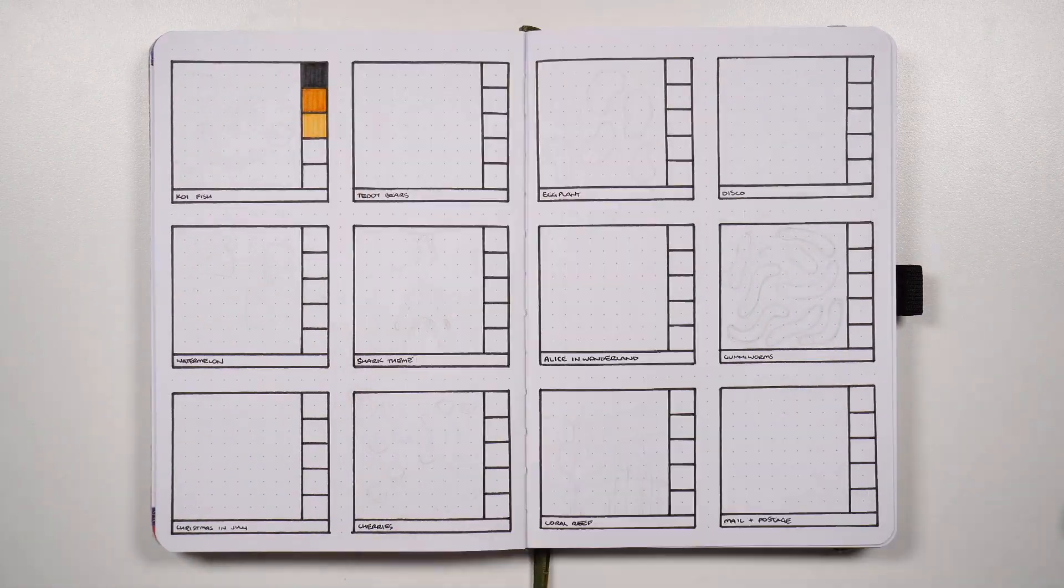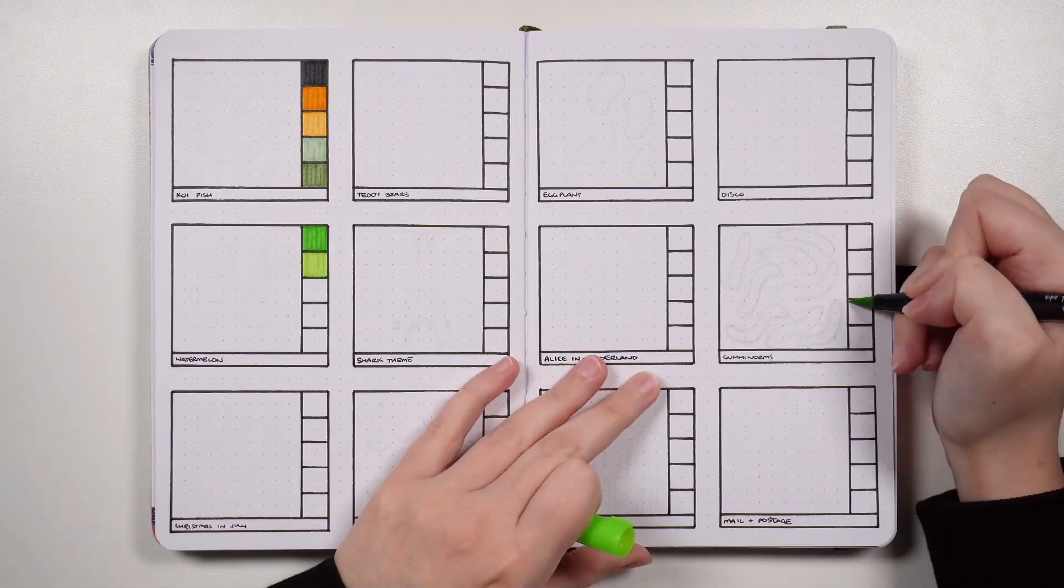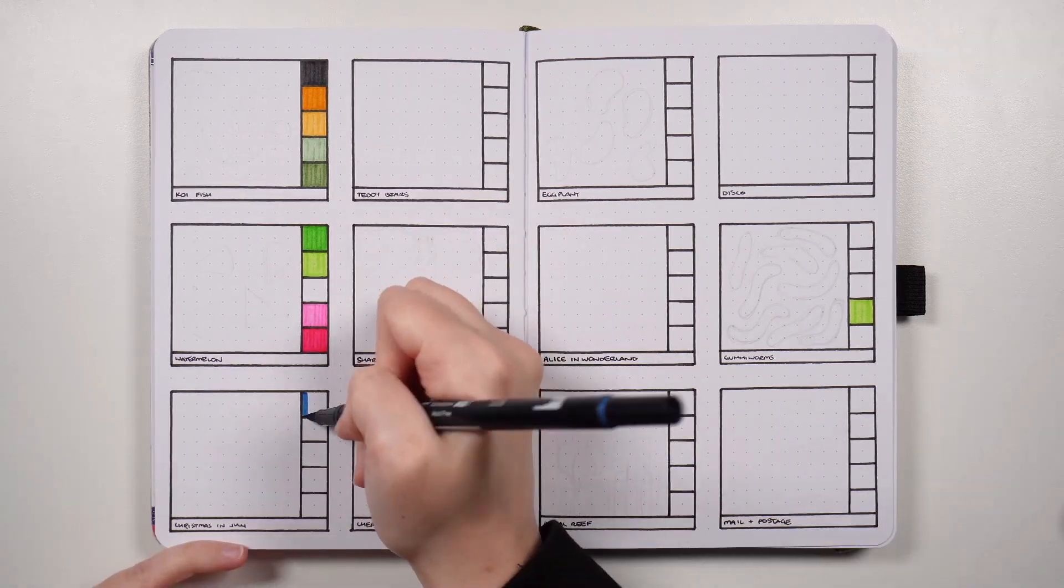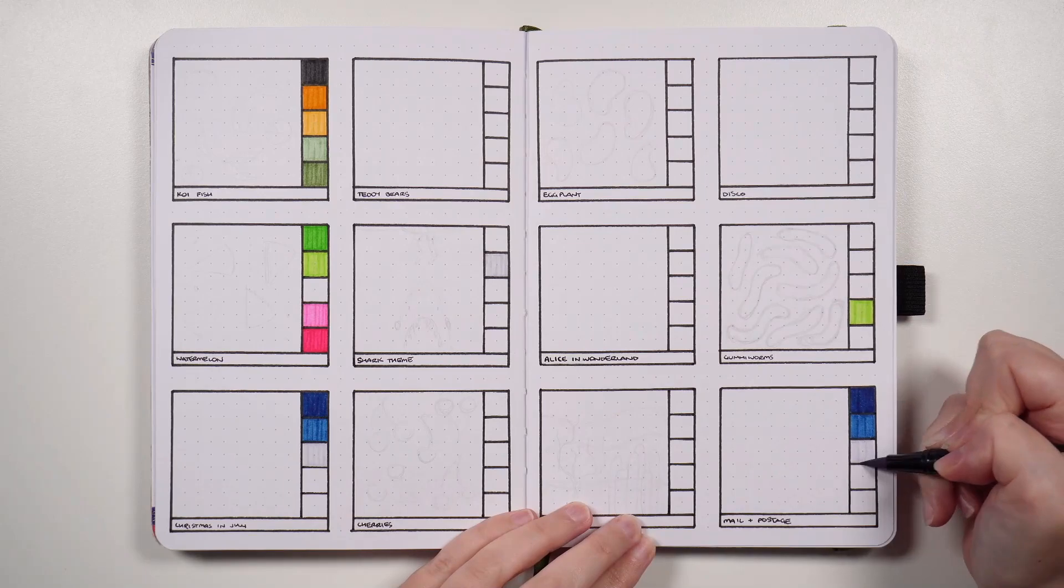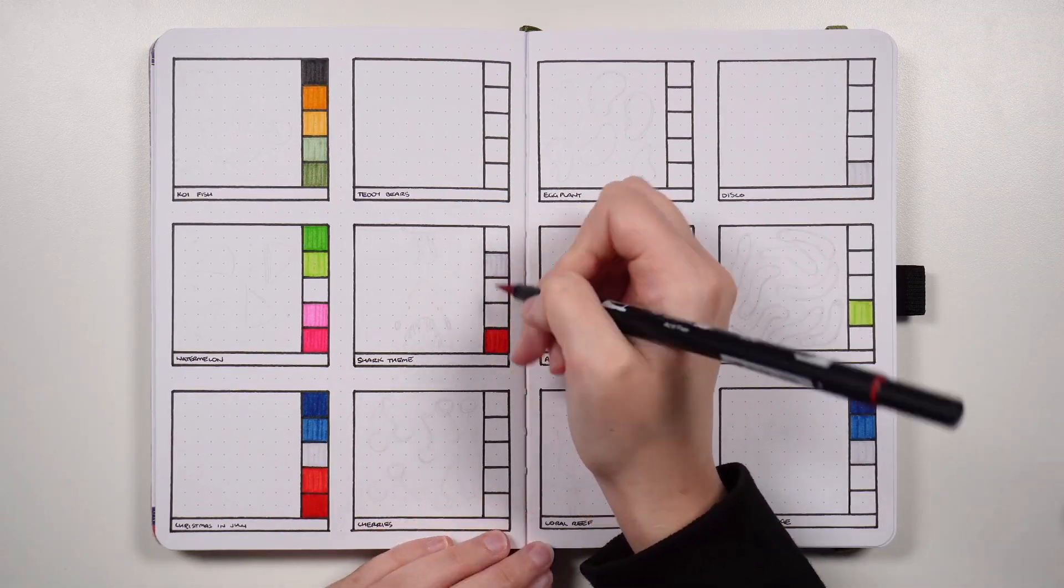Coming up with themes can be a little bit tricky. So today we have 12 themes that you could use for a July bullet journal setup. I mean technically you could use them for any bullet journal setup, but I have specifically picked them so that they would be suitable for July.